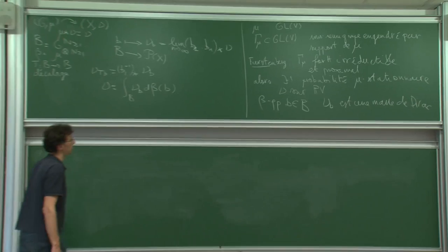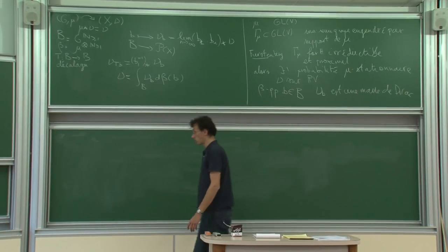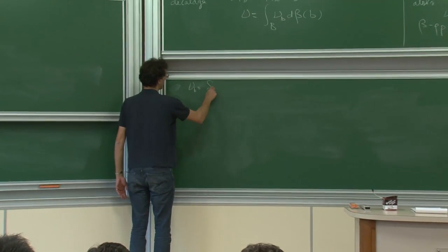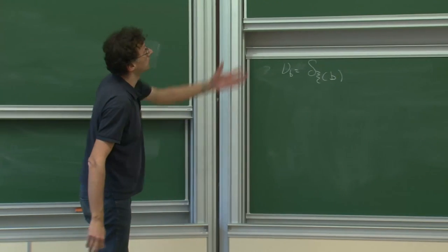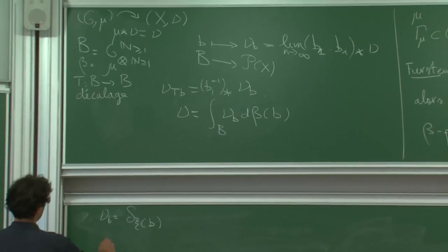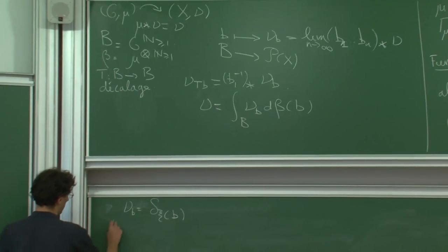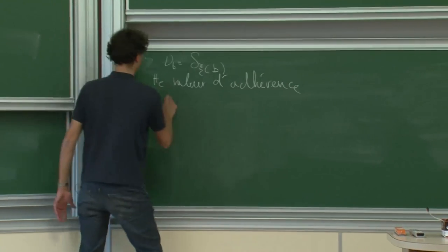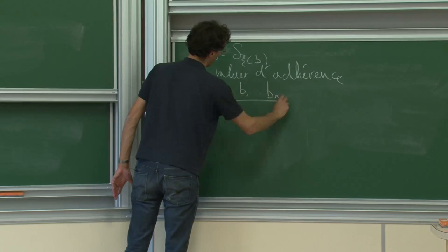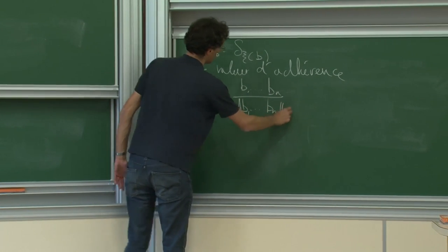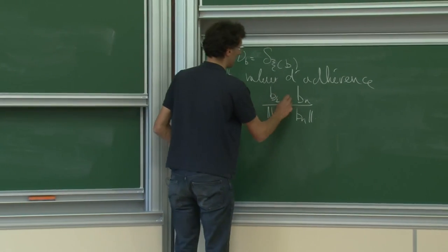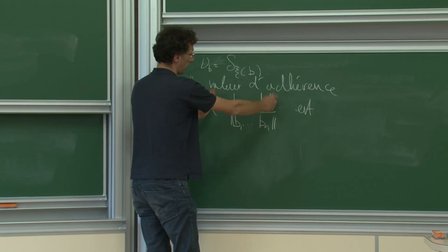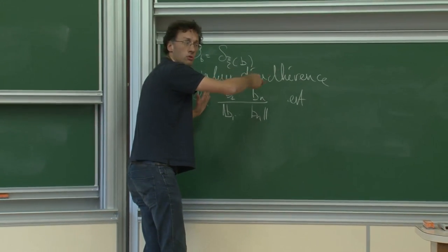À la fin du dernier exposé j'ai évoqué ce qui se passe quand le semi-groupe n'est pas proximal. Quand c'est proximal, nu_B est la masse de Dirac en xi_B. Pour les grandes matrices, toute valeur d'adhérence de B_1...B_N normalisée — c'est-à-dire divisée par sa norme — a son image déterminée : son noyau peut varier, mais son image à gauche a tendance à être déterminée par xi_B, un élément de l'espace projectif.